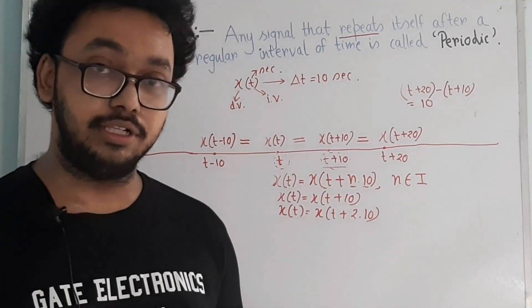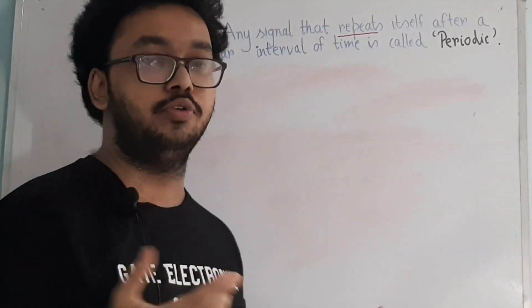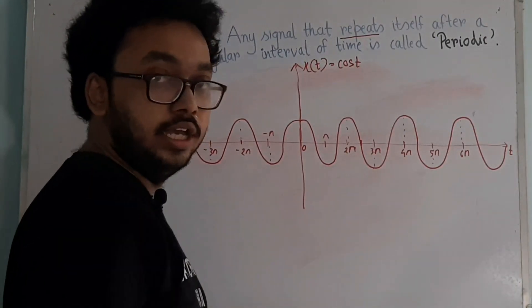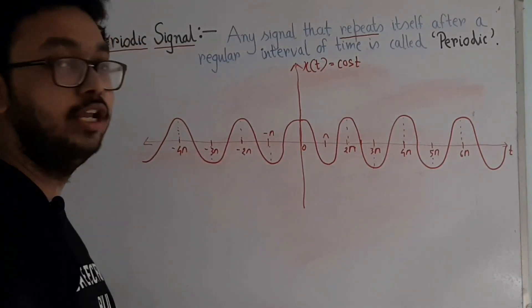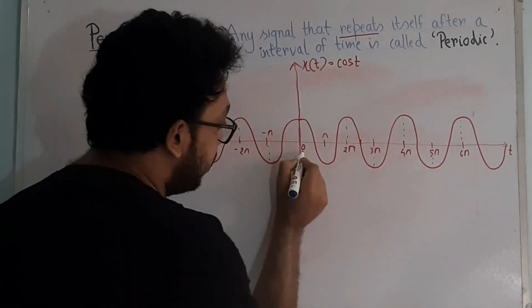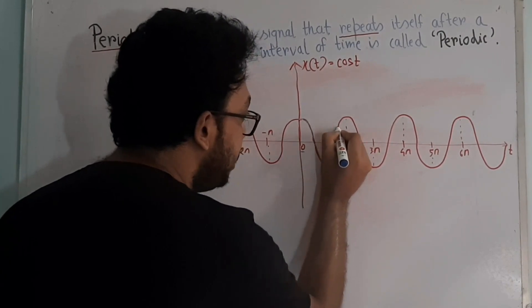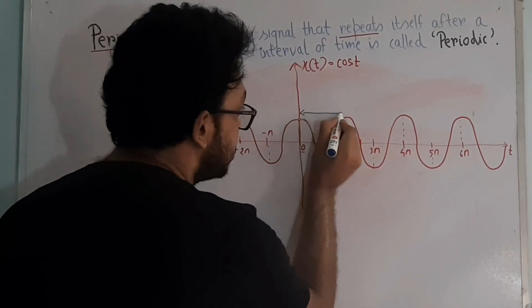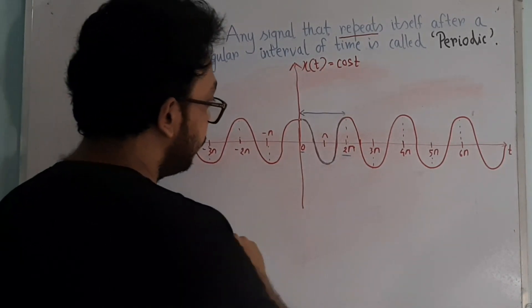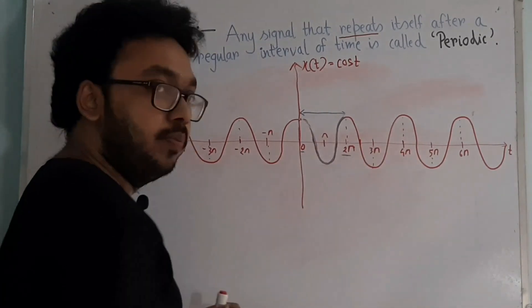Let us explain this using an example. Let me draw the waveform of X(T) = cos(T). The waveform of X(T) = cos(T) looks like a standard cosine wave. Now observe the portion of the waveform between T=0 and T=2π. If you repeat this portion from T=−∞ to T=+∞, you will get the complete waveform.